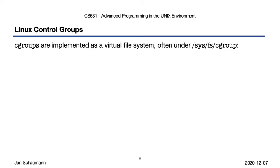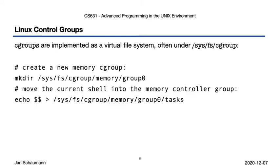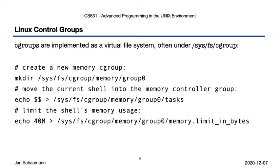Cgroups are implemented as a virtual filesystem, often using the sysfs cgroup mount point, thus allowing for enabling of different controllers using mount options. Here's an example of restricting memory usage of the current shell. Creation of a new cgroup is trivially done by creating a new directory in the pseudo filesystem, placing the process ID of the shell into it, and then adding a conveniently human-readable restriction. The manual page is very detailed and extensive here, and I recommend you take the time to read through it.